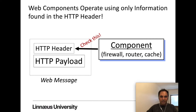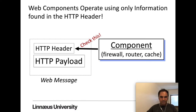Firewalls, routers, and caches don't look into your message body. A web message is composed of two parts mainly: the header and the payload. The HTTP header contains the metadata, and the payload contains the actual message or the body. Web components like firewalls, routers, and caches look into your HTTP header to decide if a message should be accepted or where it should be redirected. Once accepted, the requester uses the payload to read the actual message.